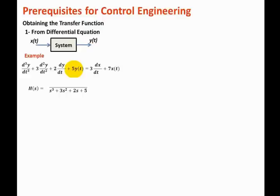In the numerator, the 3 dx/dt term becomes 3s, and the 7x of t becomes plus 7. So this is the transfer function of the system — very easily obtained from the differential equation. You put the output terms in the denominator, the input terms in the numerator, and replace the nth derivative by s to the n.